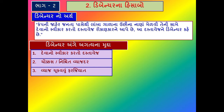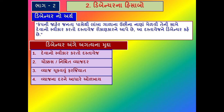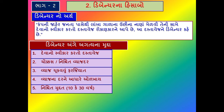સેર અંગે આપણે ચર્ચા કરેલ હતી ત્યારે - કંપનીને નફ્ફો થાય તો જ સેર પર ડિવિડન્ડ મળે, તેનો દર નિશ્ચિત હોતો નથી. જ્યારે અહીં ડિબેન્ચર માટે વ્યાજનો દર નિશ્ચિત હોય છે. ઉદાહરણ તરીકે ડિબેન્ચર પર 10 ટકા વ્યાજ હોય, તો તેને 10 ટકાના ડિબેન્ચર તરીકે ઓળખવામાં આવે છે.